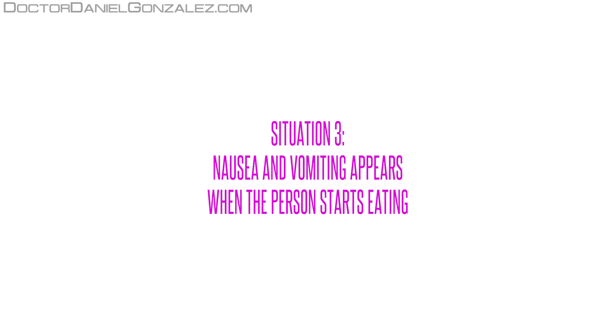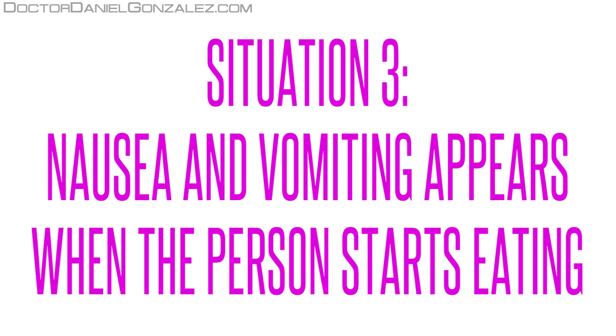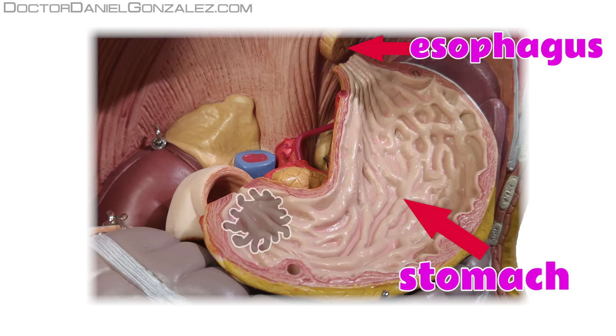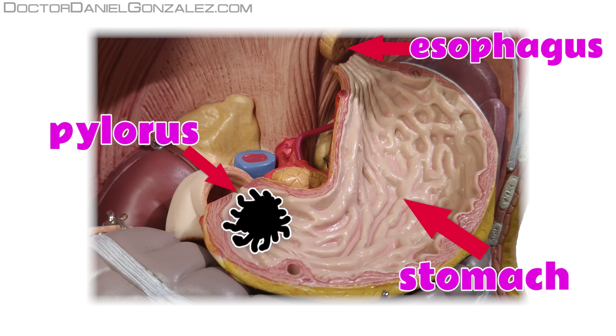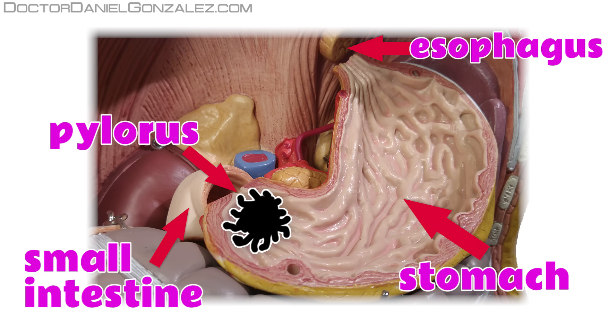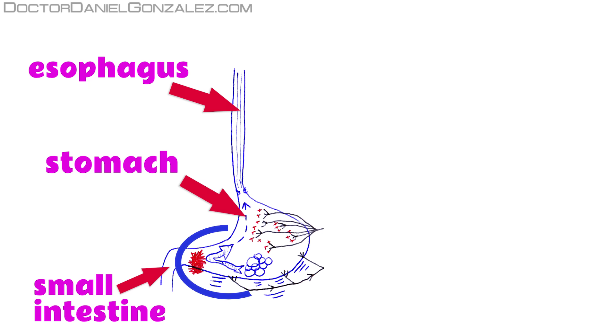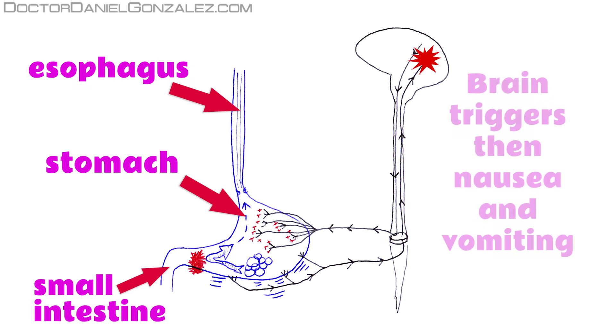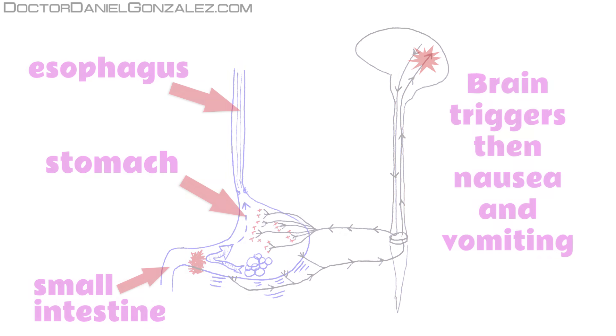Situation 3. Nausea and vomiting appears when the person starts eating. When stomach cancer is located at the pylorus, which is the region of the stomach that drains food into the small intestine, it may obstruct or even close this natural outlet of the gastric content. If the exit is obstructed, when we have enough food in the stomach, it detects that gastric content will not be emptied. Therefore it informs the brain so that it triggers the sensation of nausea and starts the vomiting reflex.